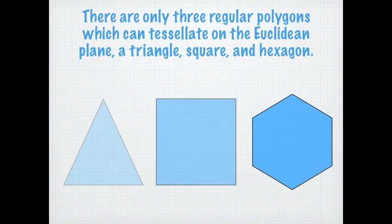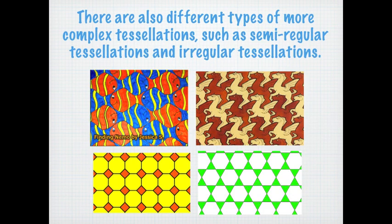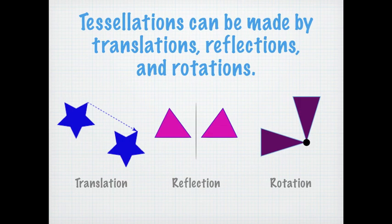There are three regular polygons that can tessellate on the Euclidean plane: a triangle, square, and hexagon. There are different types of tessellations, including semi-regular and irregular tessellations. A tessellation can be made by a translation, reflection, or rotation.